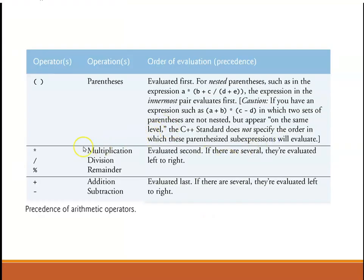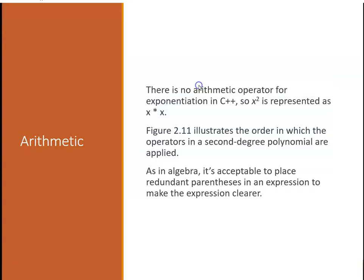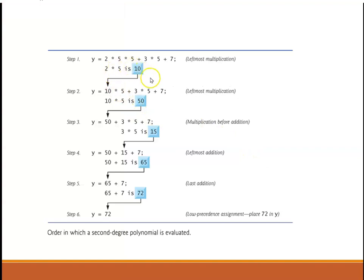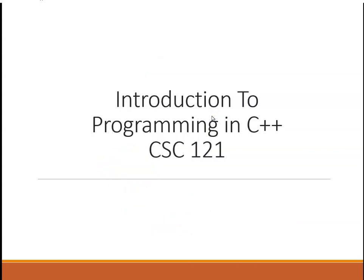The sequence the operators are provided with is basically the equivalent of PEMDAS: Parentheses, exponent (though there's no exponents in C++), multiplication, division, remainders, and then addition and subtraction. There's no arithmetic operator for exponentiation - there's a function for it, but x squared is represented as x times x. Next we'll show how we evaluate a polynomial: 2 times 5 times 5 plus 3 times 5 plus 7. First, 2 times 5 is 10, then times 5 would be 50, then 3 times 5 would be done, and then we could add them all together.